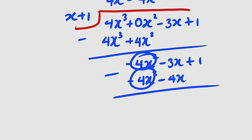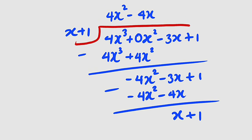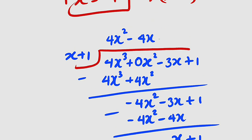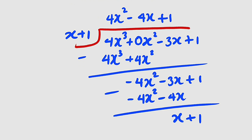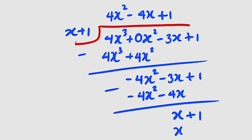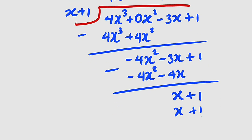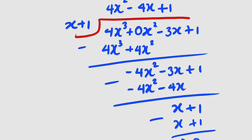Subtract again: negative 4x squared minus negative 4x squared is 0, and negative 3x minus negative 4x gives x. Bring down the 1. Then x divided by x is 1. Multiply 1 by x plus 1 to get x plus 1, subtract and get 0. Stop — division is complete.